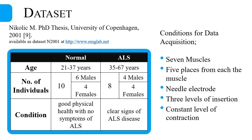The data was acquired from 7 muscles such as brachial bicep, abductor pollicis, and vastus medialis, among others. From each muscle, 5 different places were used for data acquisition. Needle EMG was used with 3 different levels of needle insertion, and a constant level of contraction was maintained during signal acquisition.